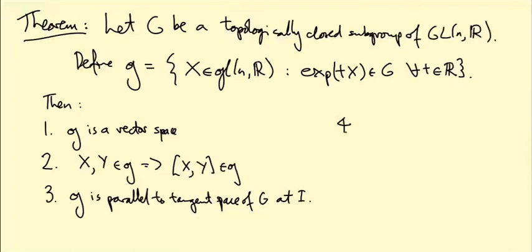And fourth, exp from little g to big G, which certainly makes sense as a map, right? If you take something X in little g, exp of X is in big G by definition. But what's the claim about this map? It's locally invertible. So we can find neighborhoods U of the zero matrix and V of the identity matrix such that there's an inverse going from V back to U.